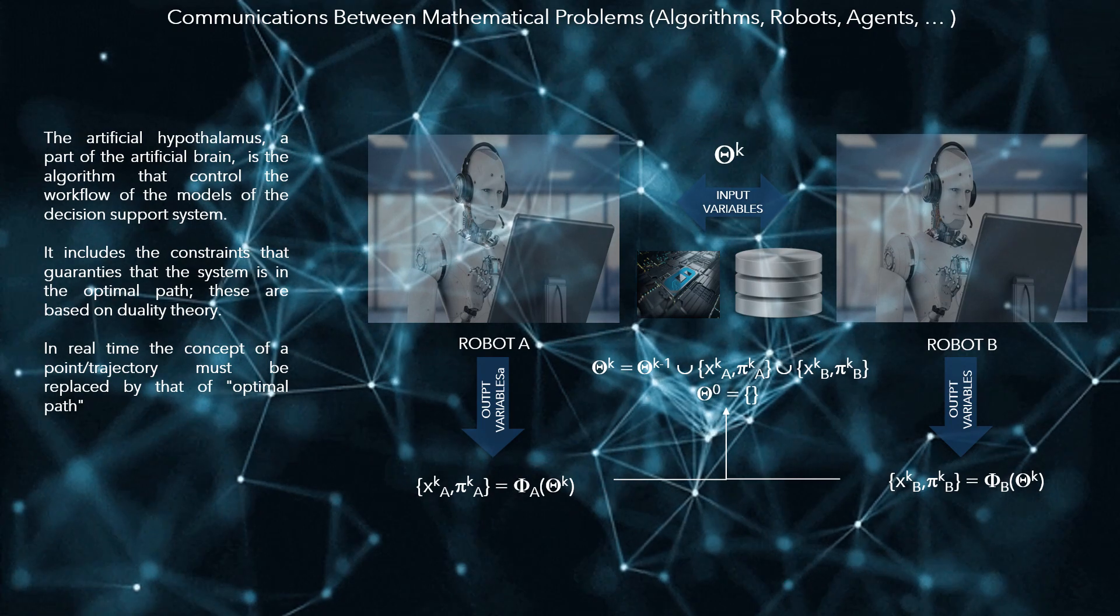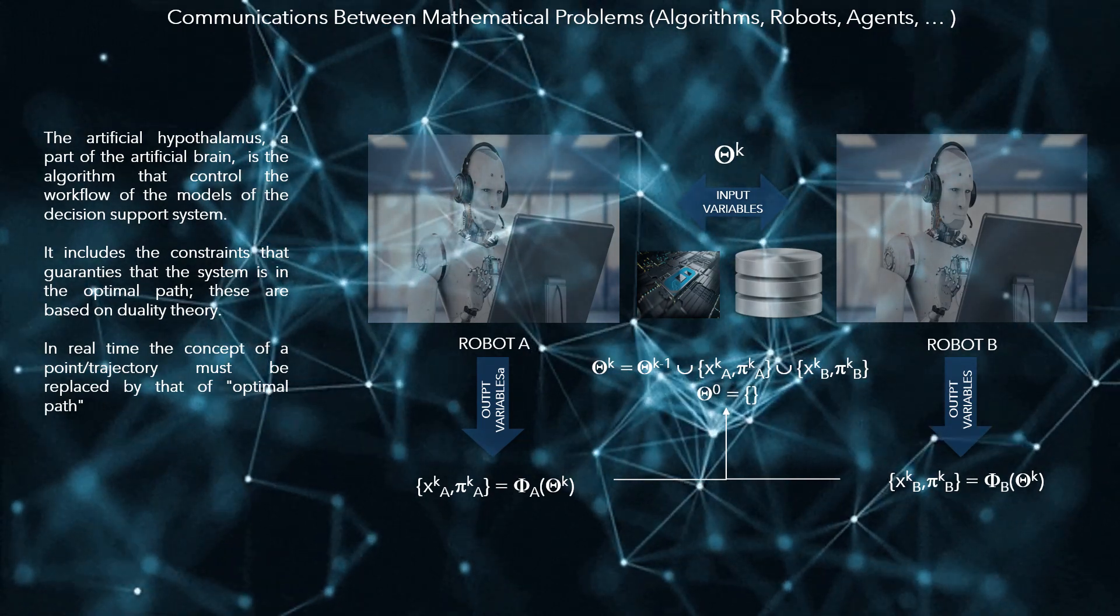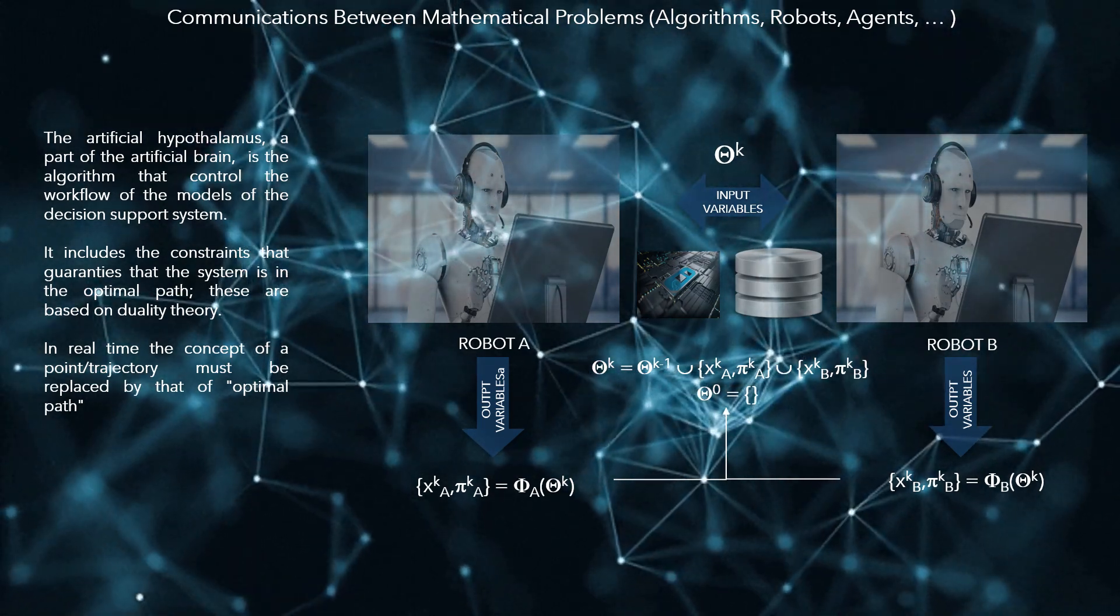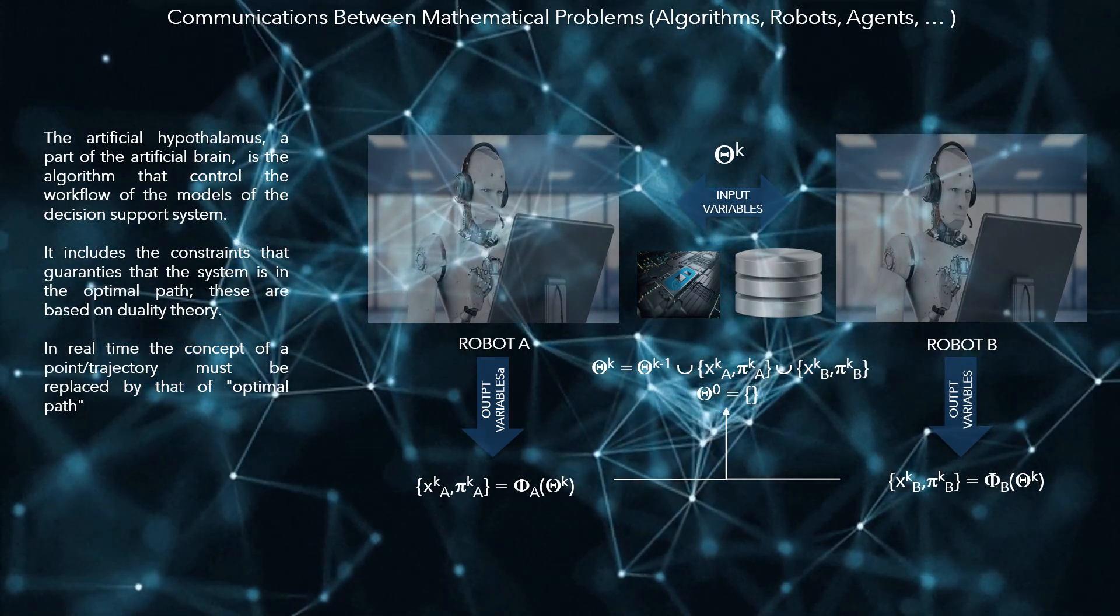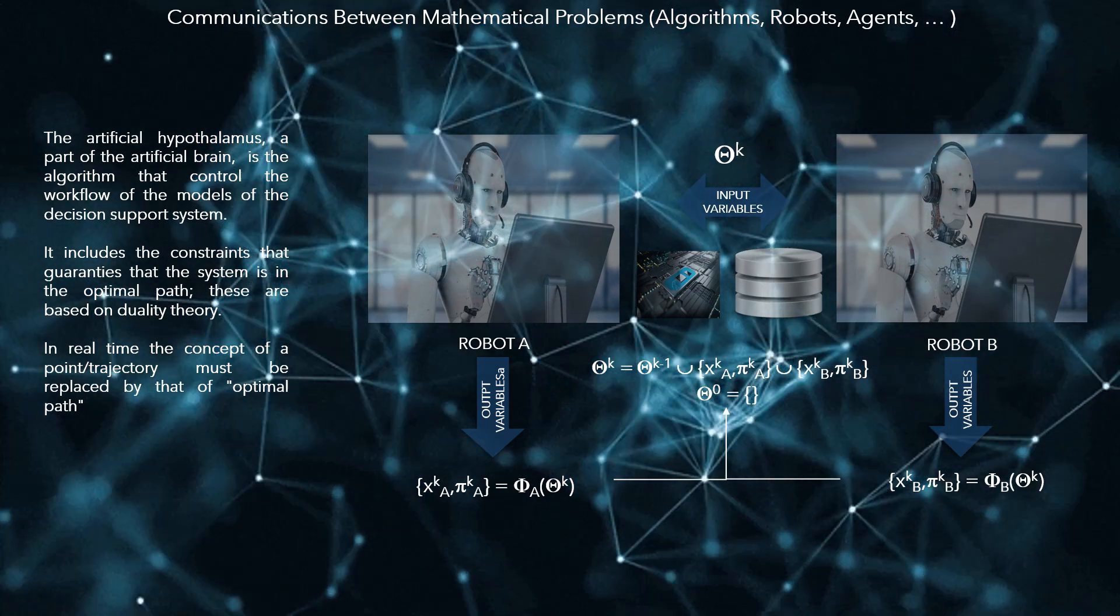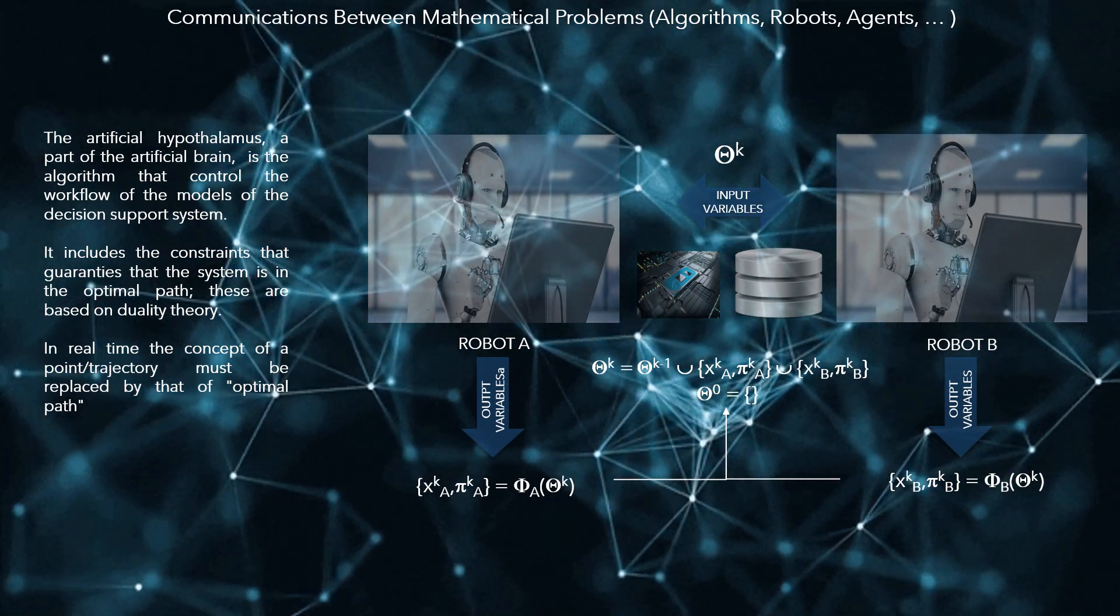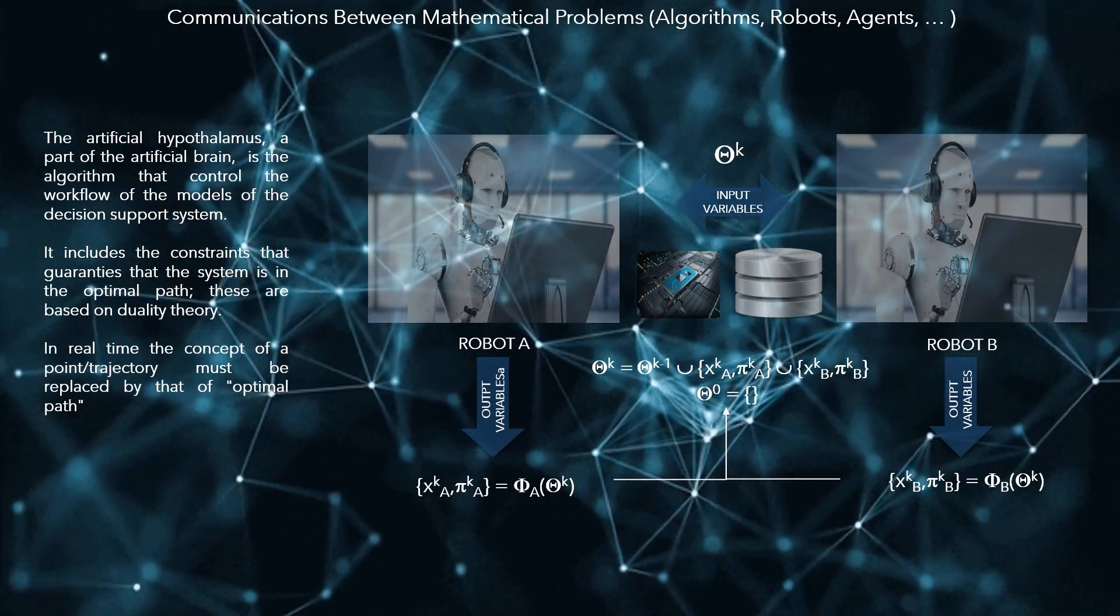The artificial hypothalamus, a part of the artificial brain, is the algorithm that controls the workflow of the decision support system models. It includes a general mathematical language between algorithms that guarantees the system is on the optimal path, based on duality theory.